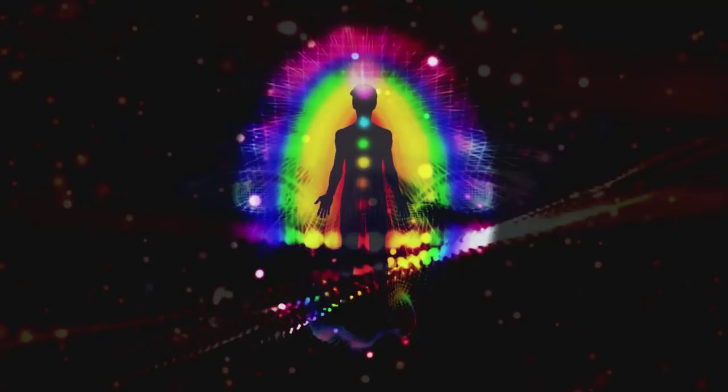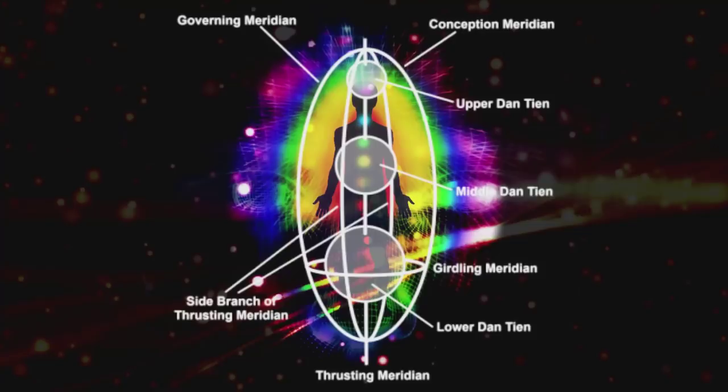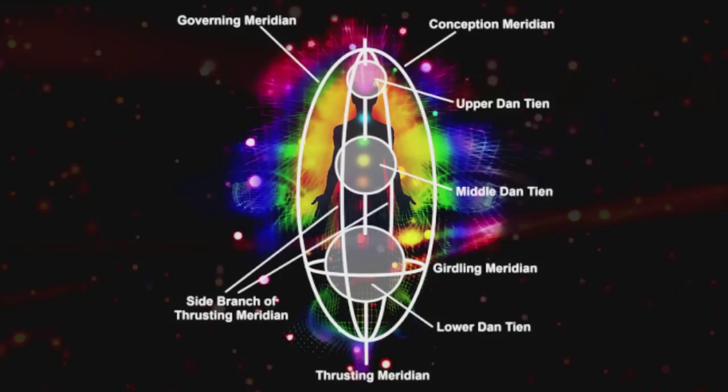In Taoist alchemical traditions, the third eye is the frontal part of the upper Dan Tien, upper cinnabar field, and is given the evocative name Muddy Pellet.